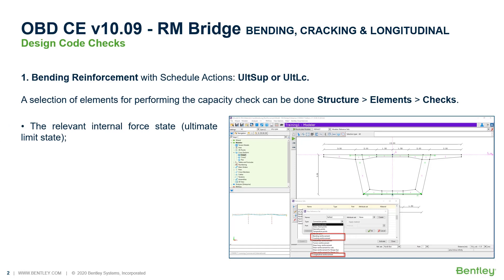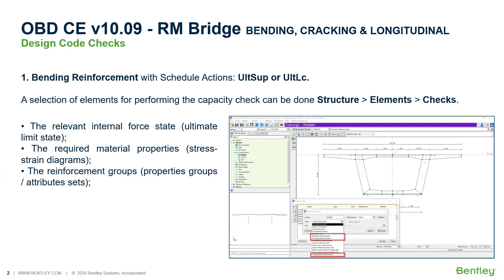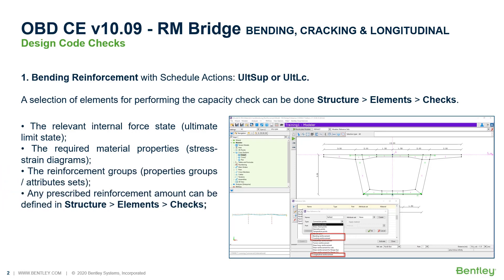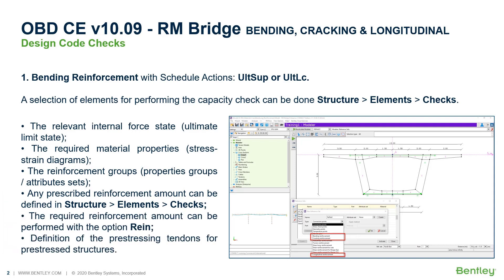For the Ultimate Load Capacity Check, the relevant internal force state must be available, the required material properties must be defined in the materials table, the respective reinforcement groups must be specified, and the reinforcement amount can be prescribed by the user or calculated by the program.